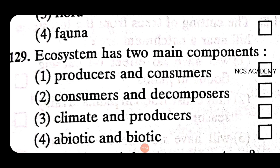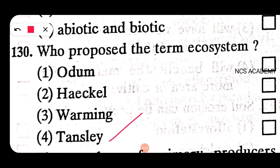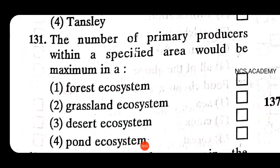An ecosystem has two main components: abiotic and biotic. Who proposed the term ecosystem? The number of primary producers within a specific area would be maximum in a pond ecosystem.